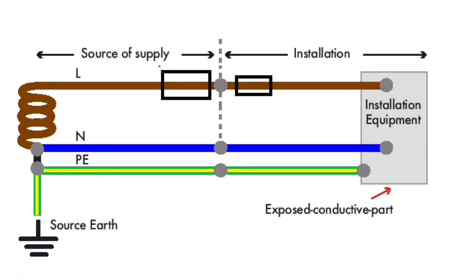The earth fault loop impedance path of an installation connected to a TNS earthing arrangement. In the event of there being a fault between the line conductor in the installation and an exposed conductive part, the fault path or earth fault path would be as follows.